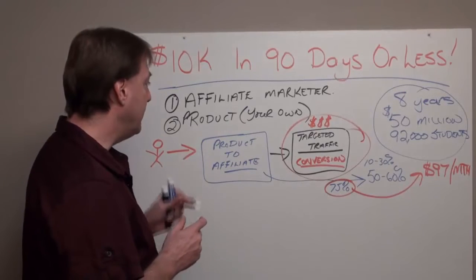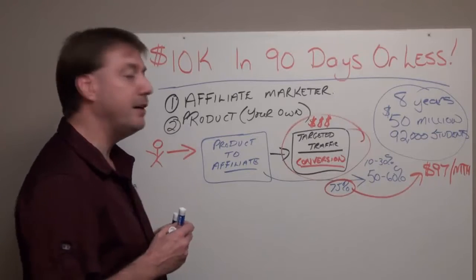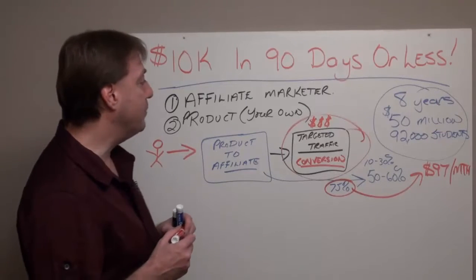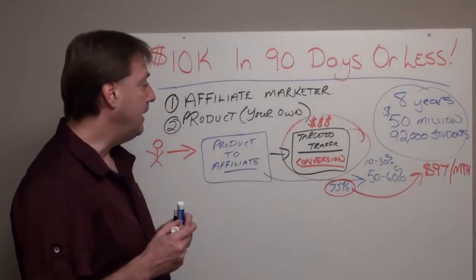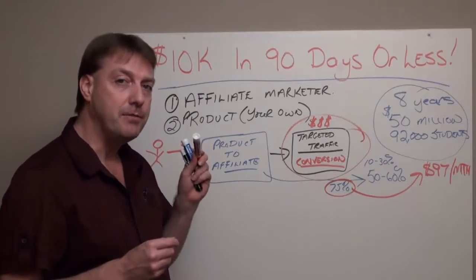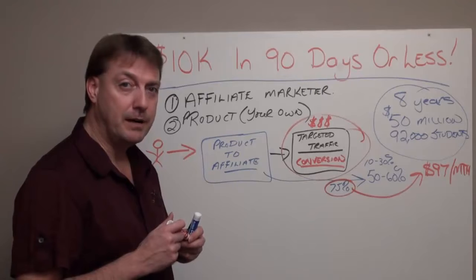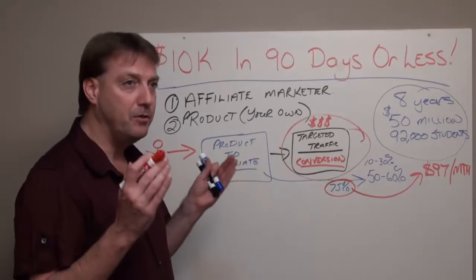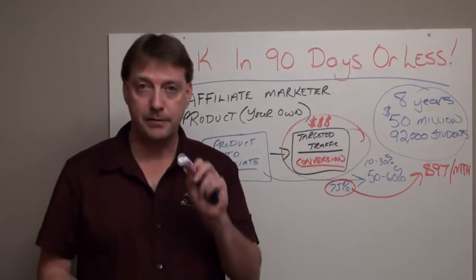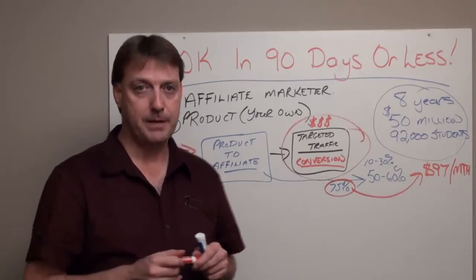Now, your own product means 100% of your effort and 100% profit. The downfall of creating your own product is it's going to cost you a lot of time and thousands of dollars in creation. If you're not a copywriter, just an initial $47 offer video sales script will cost you a minimum of $7,500 to get a copywriter to even look at you.